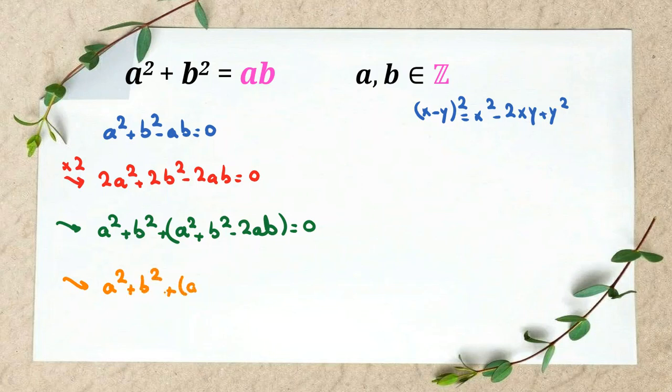Because there is a sum of three square numbers, all of them are at least zero. So when the sum of them is zero, each of them should be zero. So a is zero, b is zero, and a minus b is zero.